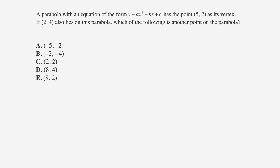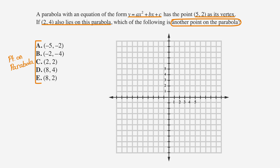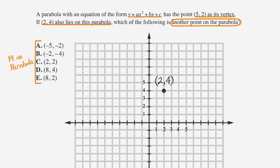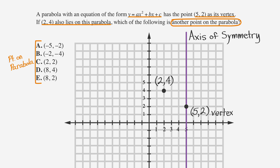That matching point will be (6, 14). Now let's look at an ACT question that uses the axis of symmetry in the solution. A parabola with an equation of the form y equals ax squared plus bx plus c has the point (5, 3) as its vertex. If (2, 7) also lies on the parabola, which of the following is another point on the parabola? Because the axis of symmetry passes through the x-coordinate of the vertex, the axis of symmetry is x equals 5. The point (2, 7) is a distance of 3 from the axis of symmetry, so continuing another 3 to the right gives the other point (8, 7). The correct choice is D.